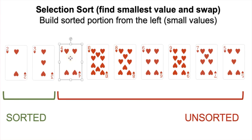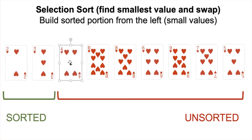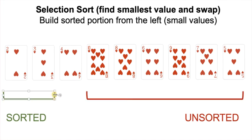We take the first element in the unsorted portion and assume it's our smallest, walk through, and swap. 4 is our smallest. 10 smaller than 4? No. 8 smaller than 4? No. 6 smaller than 4? No. 9 smaller than 4? No. 7 smaller than 4? No. 5 smaller than 4? No. So we effectively swap 4 with itself because it's already the smallest and first element in the unsorted portion. Shrink by 1, grow by 1 — that was the third iteration.